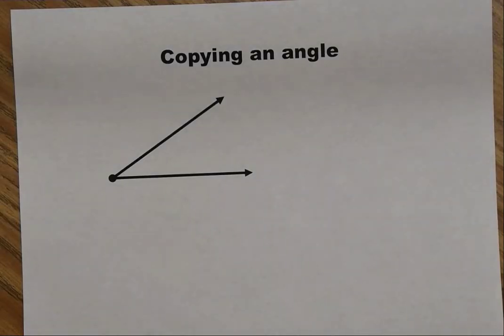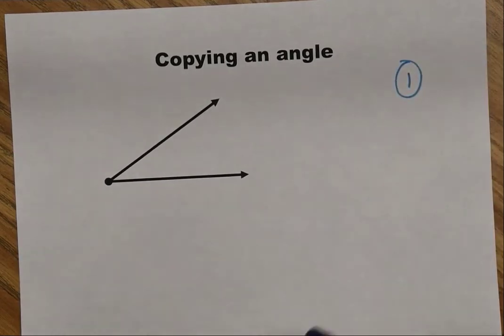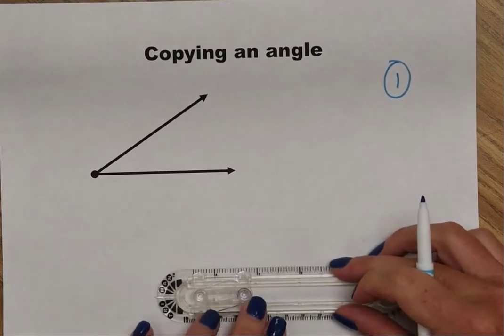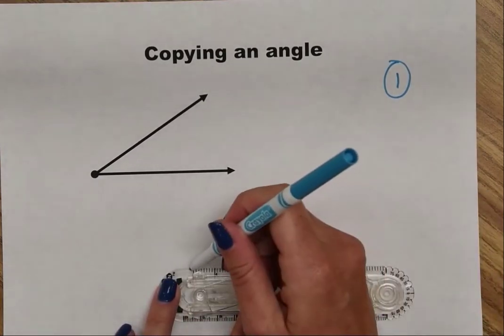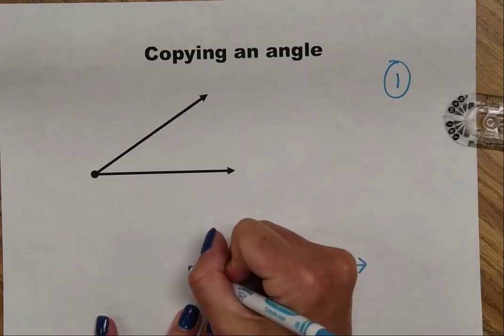Copying an angle. The first step is to create a new ray. I use the straight edge of my compass to make a straight line and then I will put an arrow on the right side and an end point on the left.